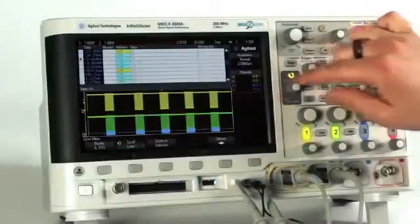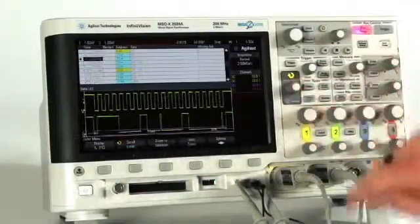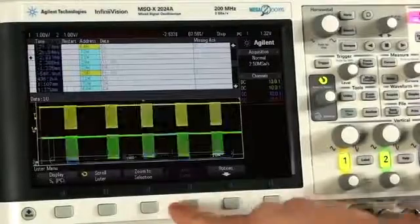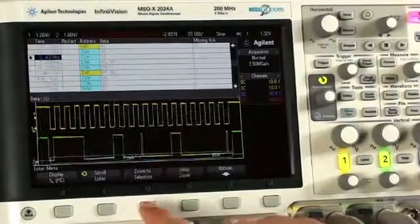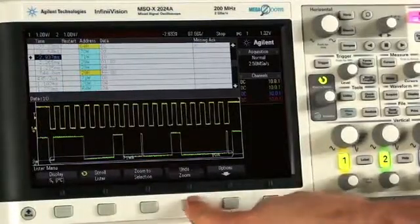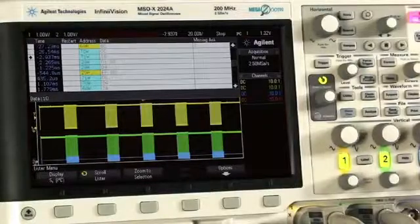If you want to zoom in on a particular frame, push the entry knob or tap the Zoom to Selection soft key. You can snap back to the full zoomed out view using the Undo Zoom soft key at the bottom.